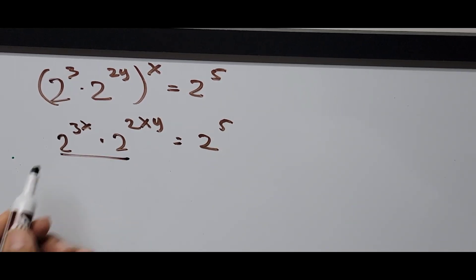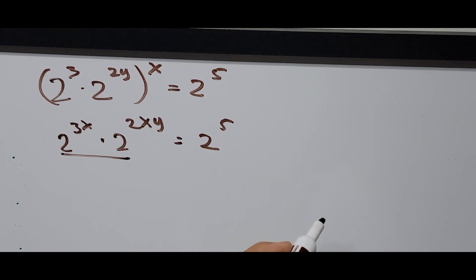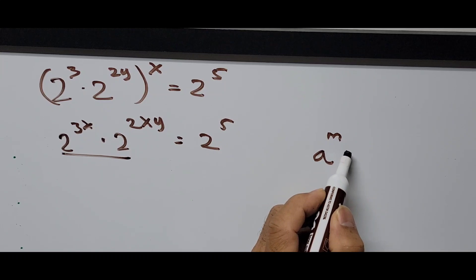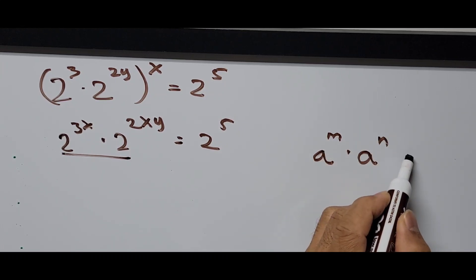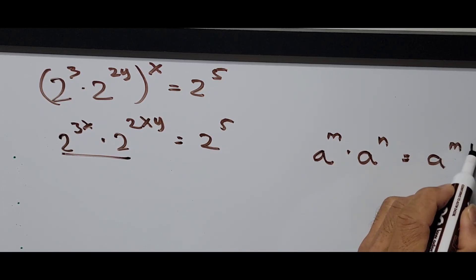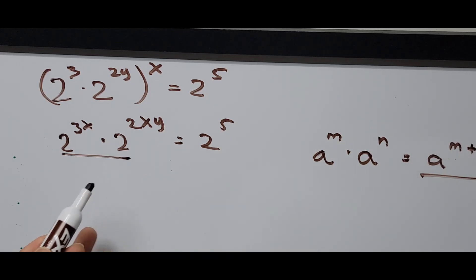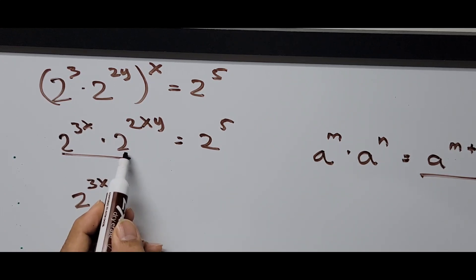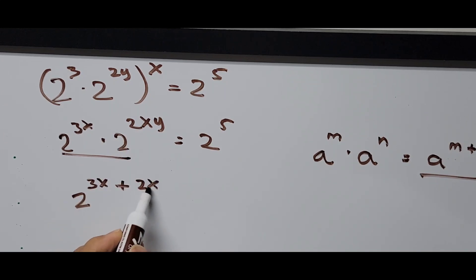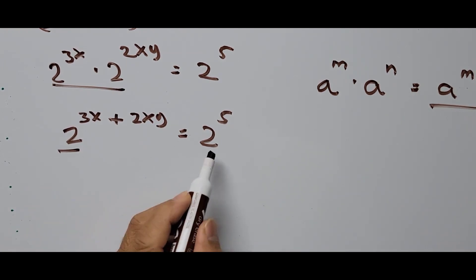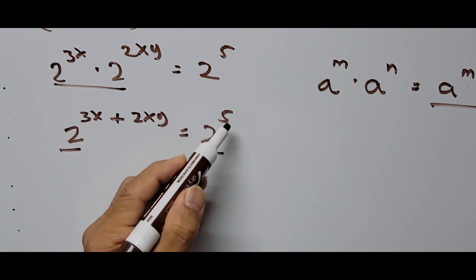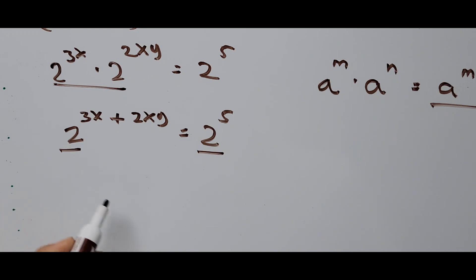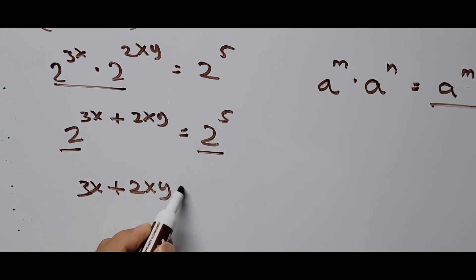On the left side of the equation we use the exponent rule: a raised to m multiplied by a raised to n equals a raised to m plus n — that is, we add the exponents. So that becomes 2 raised to the quantity 3x plus 2xy equals 2 raised to the 5th power. Since they have the same base, we equate the exponents: 3x plus 2xy equals 5.